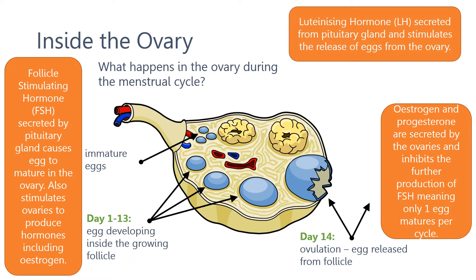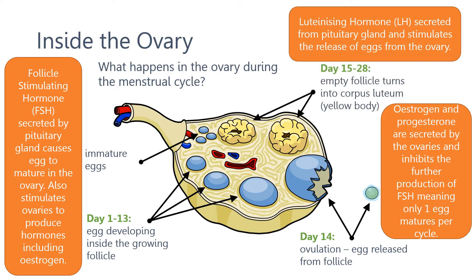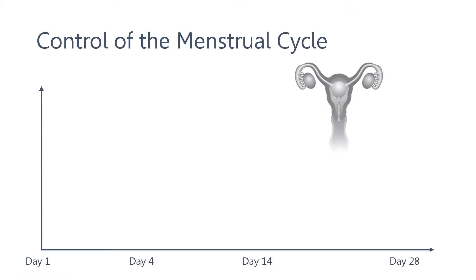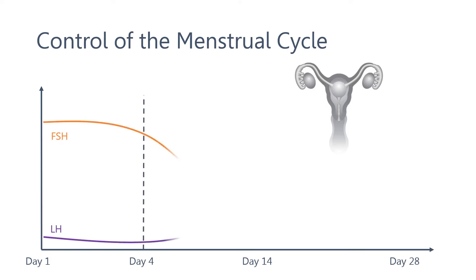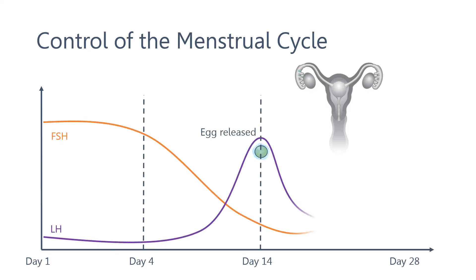Luteinizing hormone, or LH, is secreted from the pituitary gland and stimulates the release of eggs from the ovary. The control of the menstrual cycle by these hormones can also be represented in a graphical format, showing the changes in levels over time.